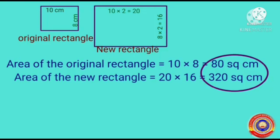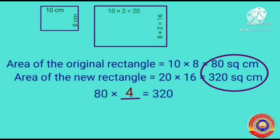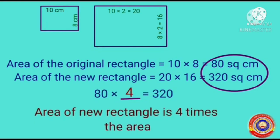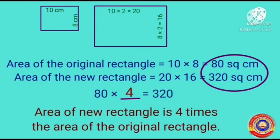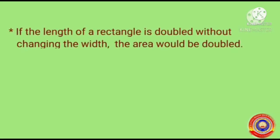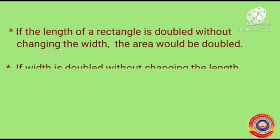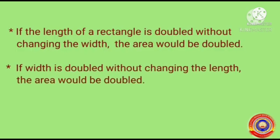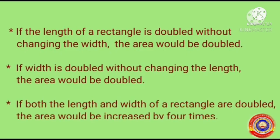Children, how much is the increase from 80 to 320? 80 x 4 equals 320. So, we can say that the area of the new rectangle is 4 times the area of the original rectangle. From these two activities, we can make conclusions: if the length of a rectangle is doubled without changing the width, the area would be doubled. If the width is doubled without changing the length, the area would be doubled. If both the length and width of a rectangle are doubled, the area would be increased by 4 times. Did you understand this?